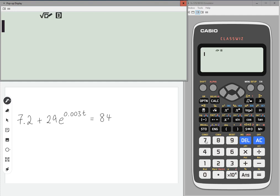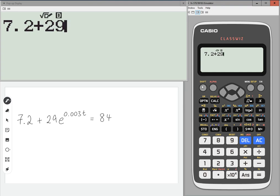So I'm going to type this equation in. 7.2 plus 29, and now we need E. So shift and then the log button.